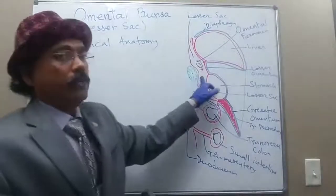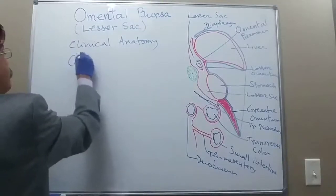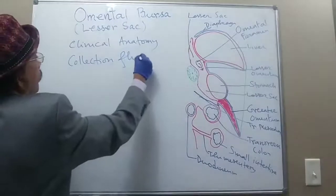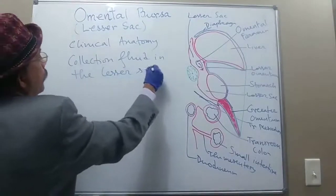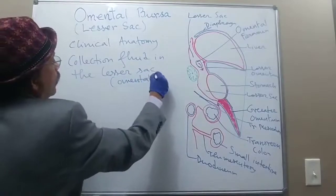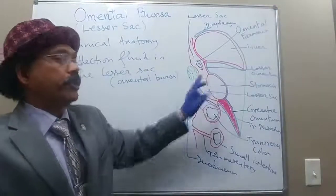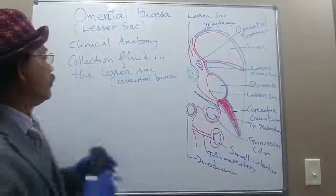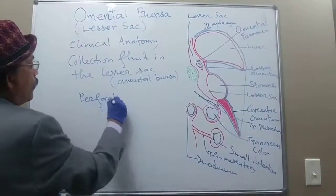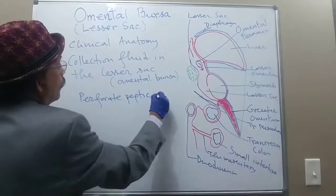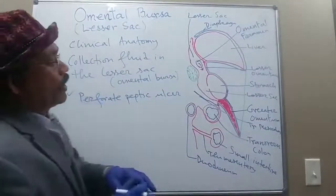This is a potential space, so there may be collection of fluid here. Collection of fluid in the lesser sac or omental bursa: the posterior wall of the stomach may be perforated by a peptic ulcer, and contents may go there. Due to a perforated peptic ulcer on the posterior aspect of the stomach, fluid can collect here.